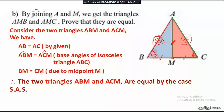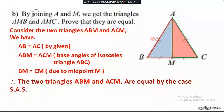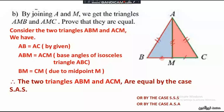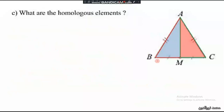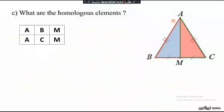Therefore, the two triangles ABM and ACM are equal by the case Side-Angle-Side (SAS). We can also prove the two triangles are equal by the case Side-Side-Side (SSS): we have AB equals AC, BM equals MC, and AM is a common side.